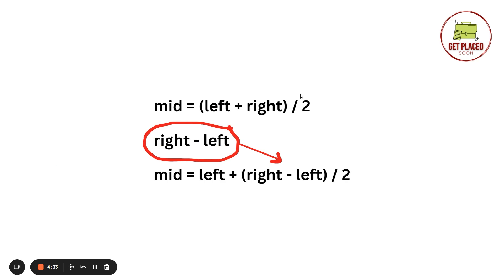Before looking at the implementation, an important note: from childhood we used to find the midpoint as (left + right) / 2. But in programming, when you compute left + right, their sum could exceed the maximum value storable in an integer data type if both left and right are large numbers. This can cause overflow or incorrect results. So to avoid that, write it as left + (right - left) / 2, which gives the same result without overflow.